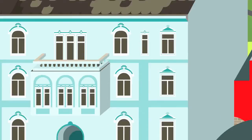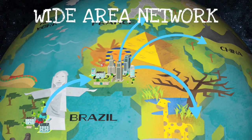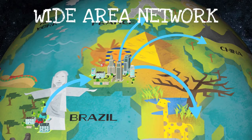A wide area network is a telecommunication network that covers a broad area. For example, a WAN can link across metropolitan, regional, or even national boundaries. Business and government entities utilise WANs to relay data among employees. This is called a virtual private network, or VPN.